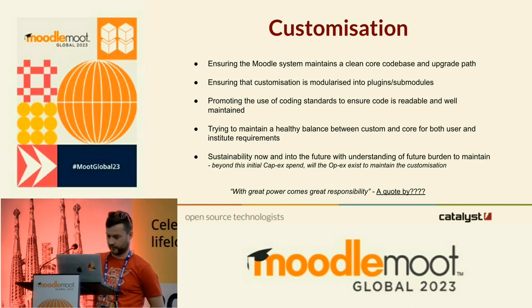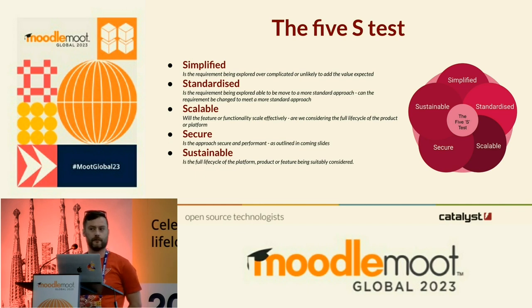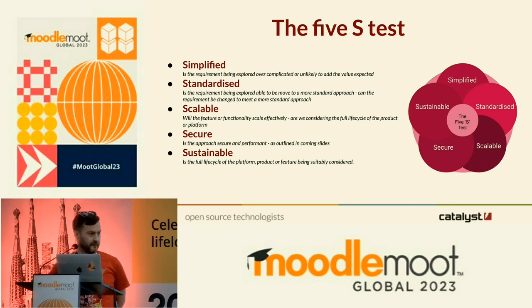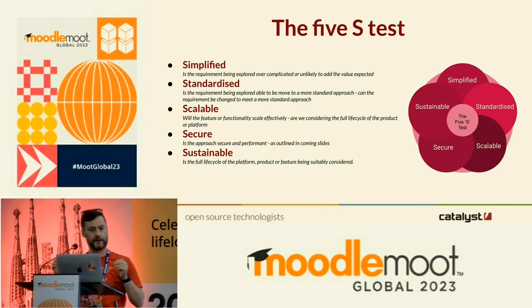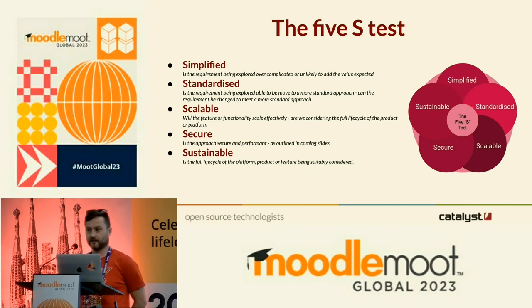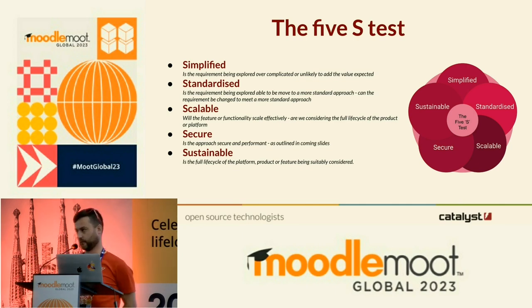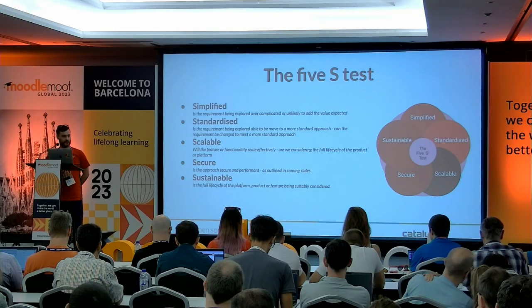We run a basic test across ideas or innovations being considered, which we call the 5S test. Is it simplified and standardised — are you building something so unique to one use case that it has no wider appeal? Can your requirements be broadened enough to be open sourced and shared back so others may engage with your new feature? Is it scalable — it works with 100 users, but will it work with 10,000 users across multiple platforms? Is it secure — probably should be at the top of the list. And is it sustainable — are we going to be able to upgrade and maintain this functionality into the future?